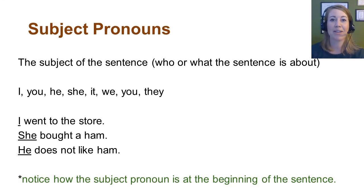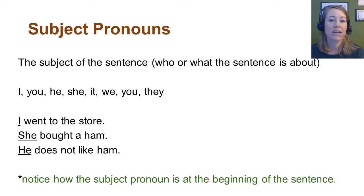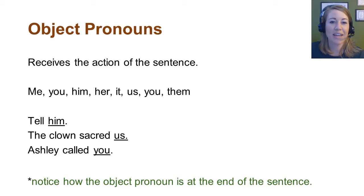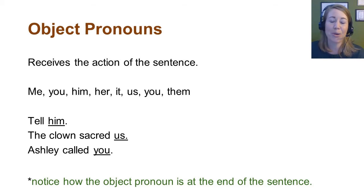So if you're asking yourself whether you're dealing with a subject pronoun, start by thinking about where it is in the sentence — is it at the very first part, before the verb? It might be a subject pronoun. Object pronouns receive the action of the sentence: Tell him. The clown scared us. Ashley called you. Notice how the object pronoun is at the end of the sentence. Our subject pronoun was at the beginning, and our object pronouns are at the end.